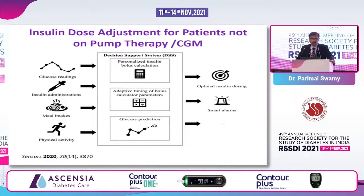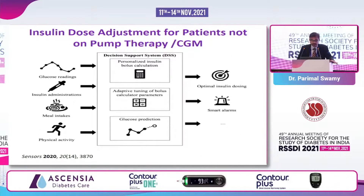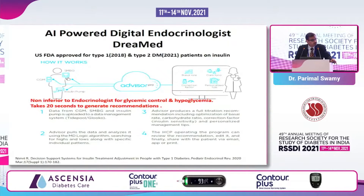In patients not using an insulin pump or continuous glucose monitoring, AI can, based on multiple glucose monitoring readings, the last dosage of insulin, meal intake, and physical activity, do detailed glucose prediction trending and optimize the insulin dosage. A study published this year with Insulin Advisor Pro from DREAMAD, approved for type 1 and type 2 diabetes, proved it was non-inferior to the endocrinologist for glycemic control and hypoglycemia prevention. Most importantly, it took only 20 seconds to generate recommendations from this AI-powered application.